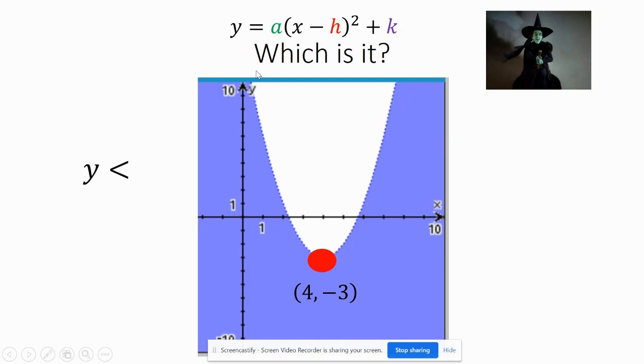And because I see a dotted line, I know that it's going to be one with no bar in it. And because I'm shaded below this point, I know the y value has to be smaller.